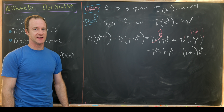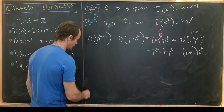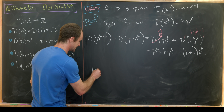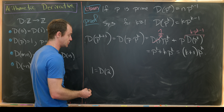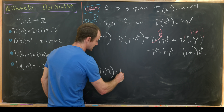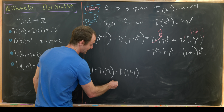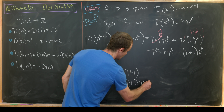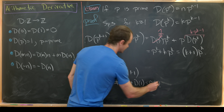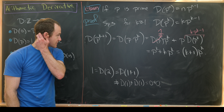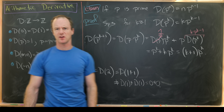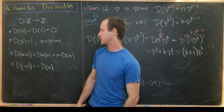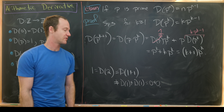One thing we don't satisfy is an addition rule, and we can check that very quickly. d(2) equals 1 because 2 is prime, and 2 equals 1 plus 1, but d(1+1) is not the same as d(1) plus d(1), which would be 0 plus 0. So this arithmetic derivative uses the multiplicative properties but not the additive properties.